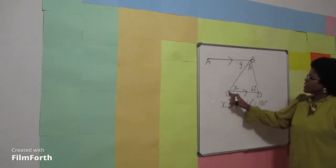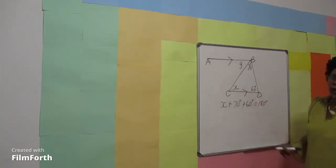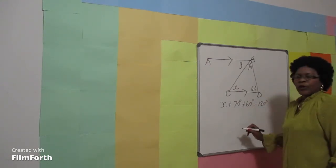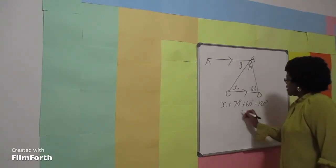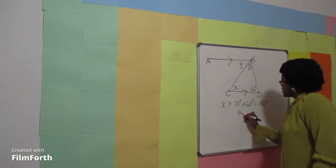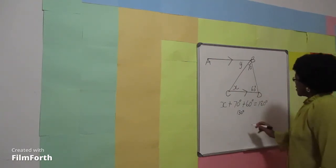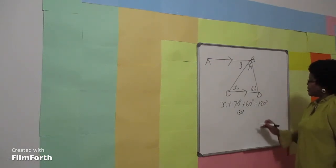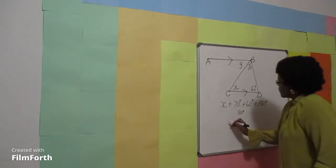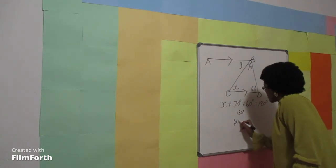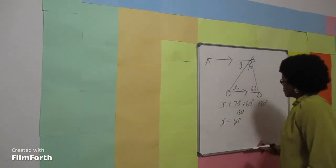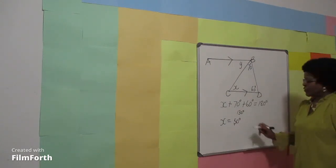To find X, add up the two angles: 60 and 70 is 130 degrees. 130 degrees subtracted from 180 degrees gives 50 degrees. The value of X is 50 degrees.